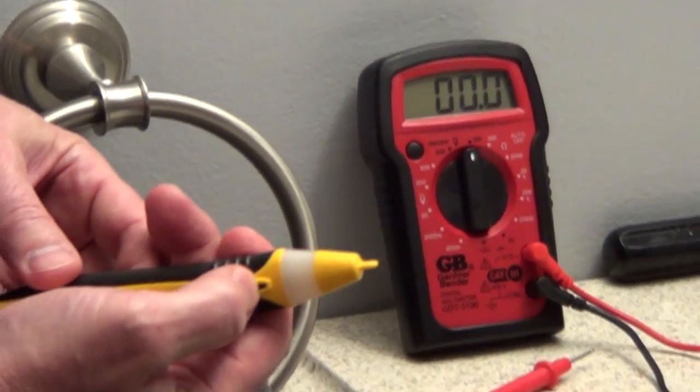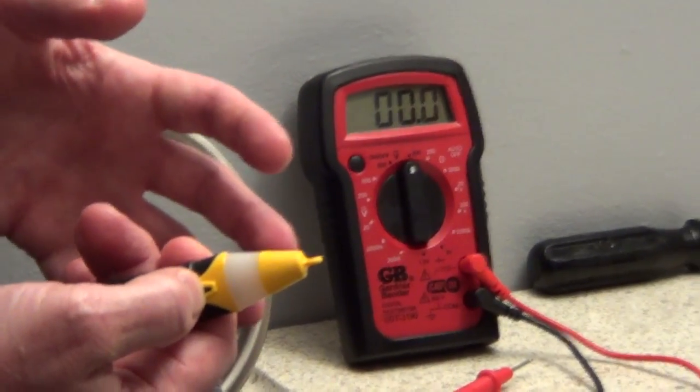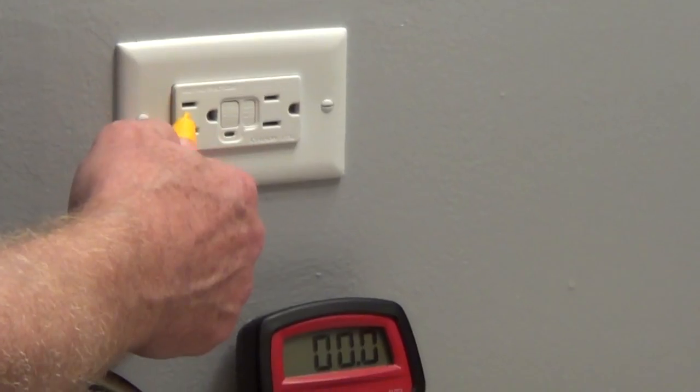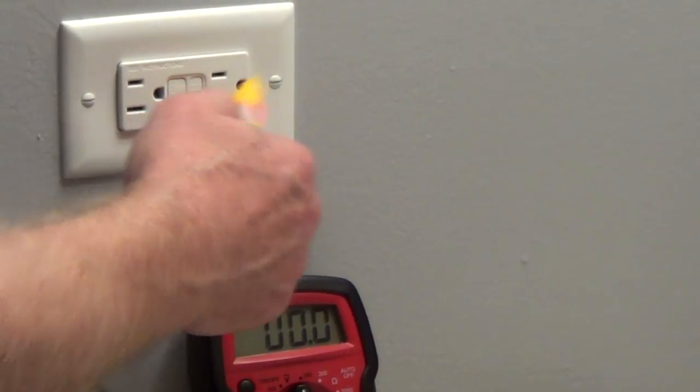When you depress this and hold it on it's going to chirp and give you a light. Now by continually depressing this button you can tell whether a circuit is live and you don't have to touch it.